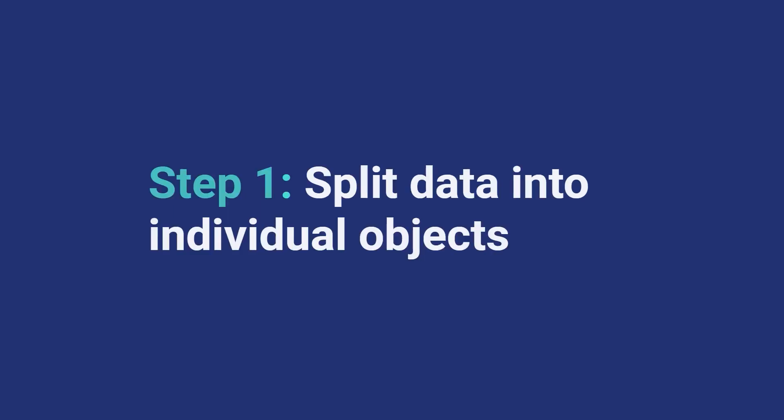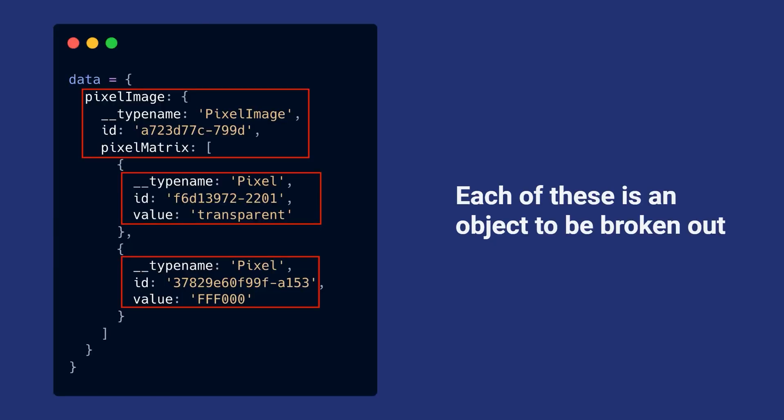So it happens in three steps. You get your data, we look at it, and we split the data into entities — individual objects. Anything that has an identifier, we split off and pull out. There's pixel image, there's this other pixel, and that other object in the pixel matrix that returns a list — you can see it doesn't have an identifier and it's not outlined in red, so it's not going to be broken off. It'll get cached under its parent object, which is pixel image.